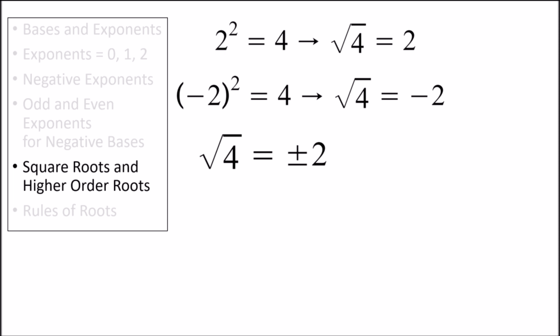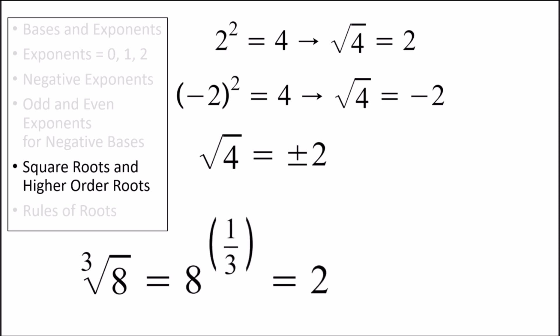We can also have higher order roots. Higher order roots are expressed with a number superscripted to the left of the radical sign, or as a fractional exponent. For example, the cubic root of 8 can be written as 8 raised to the 1/3 power, which is equal to 2.